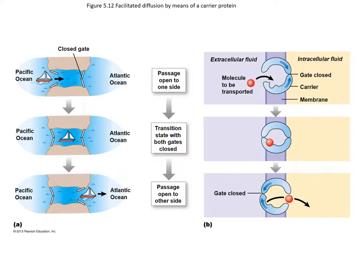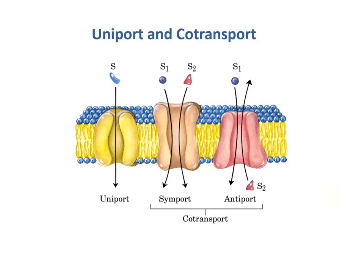There are three types of carrier proteins: a uniporter, a symporter, and an antiporter. Uniporters move one molecule in one direction. Symporters move two molecules in one direction. Antiporters move two molecules in opposite directions. The symporter and antiporter are known as co-transporters because they transport two molecules.